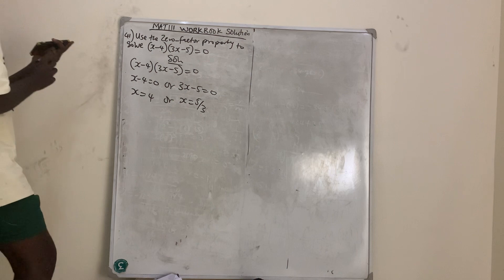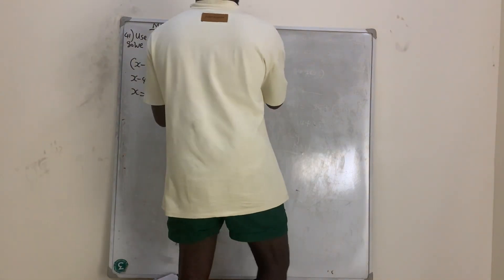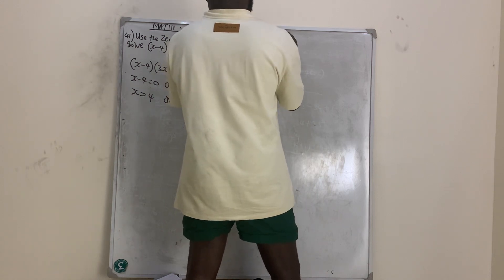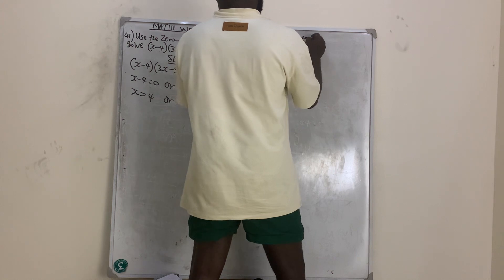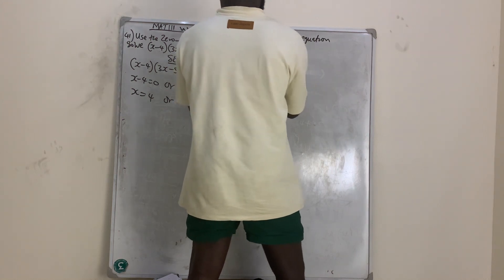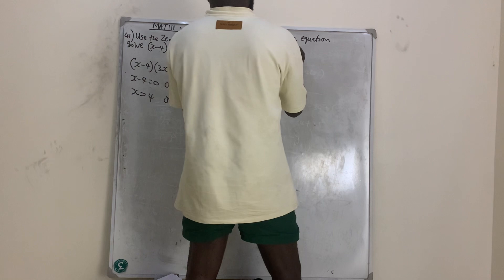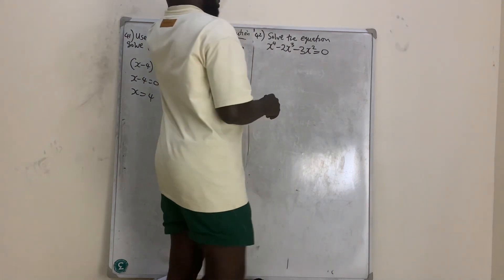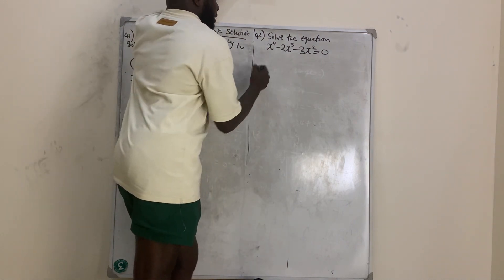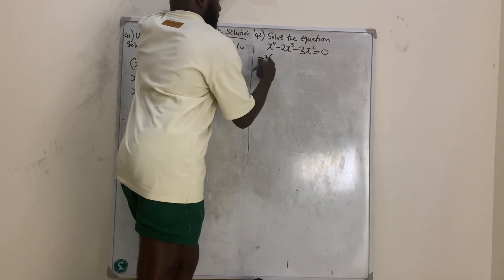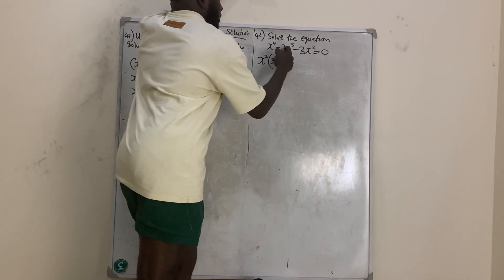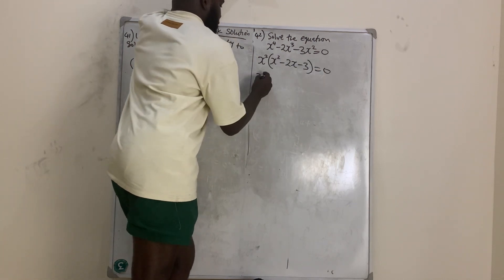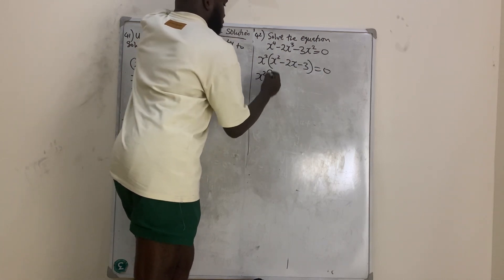We move to question number 42: solve the equation x to the power 4 minus 2x to the power 3 minus 3x squared equals zero. Looking at this equation, they have something in common — I can factorize x squared. So x squared bracket: divide to get x squared minus 2x minus 3 equals zero.